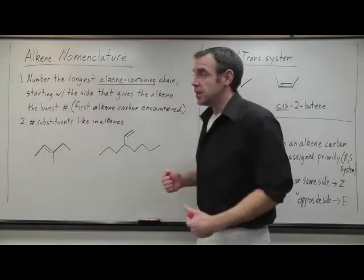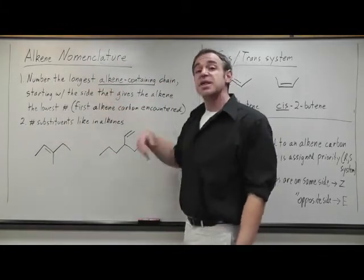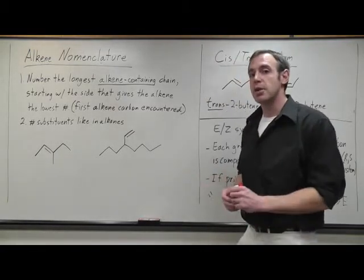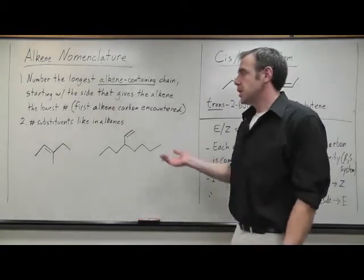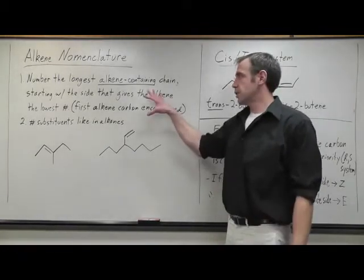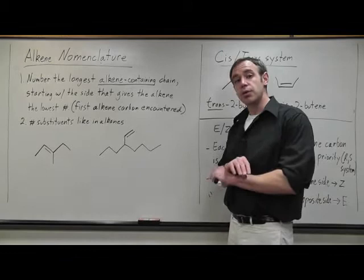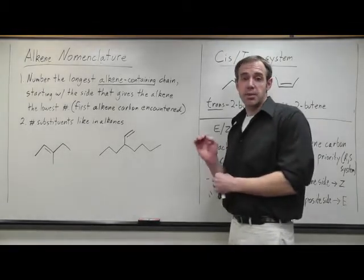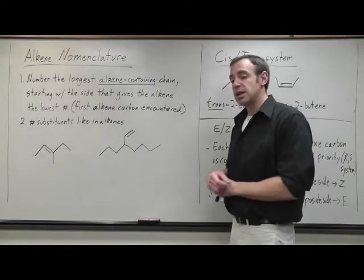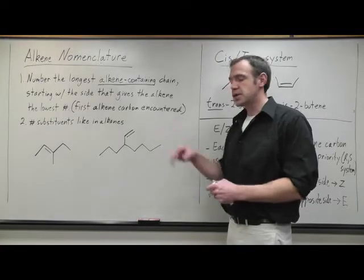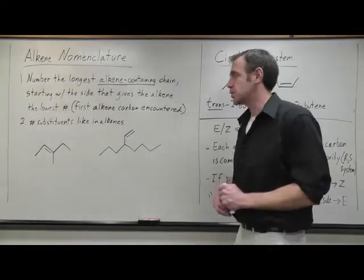To name alkenes, you number the longest alkene-containing carbon chain, starting with the side that gives that alkene the lowest number, and then you're going to number substituents just like in alkanes. Now, these rules apply to normal alkenes without any other highly prioritized functional groups. Later on, we'll see examples where alcohols are involved, and that'll change things because we'll have to use the alcohol rules as well.